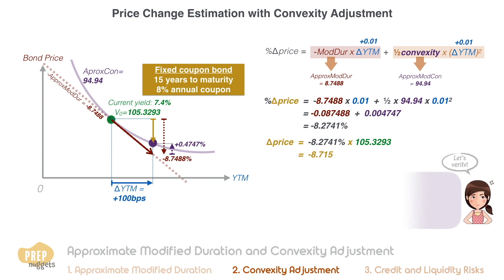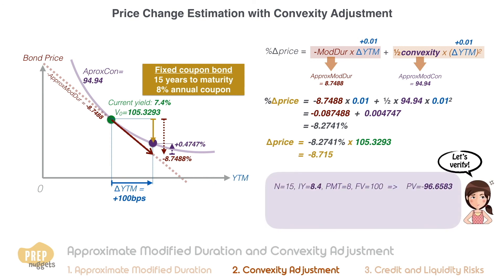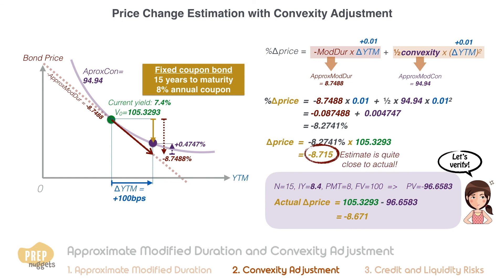Let's verify this using discounted cash flow. With a discount rate of 8.4% — a 100 basis point increase in yield — we get a new price of 96.6583, so the actual drop in price is 8.671 per 100 par. As you can see, the estimated decrease in price with the convexity adjustment is actually quite close to the actual decrease in price.